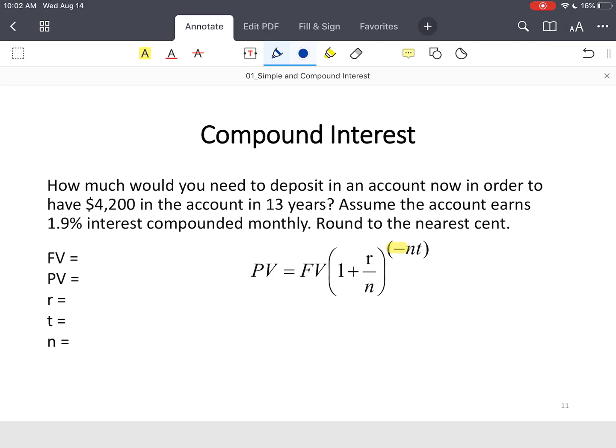So, let's look at this example. How much do you need to deposit in an account now? That's present value. That's what we're looking for, to have $4,200 in 13 years. Assume the account earns 1.9% interest compounded monthly. So, we know it's compounded monthly. Time is 13 years. The interest rate is 1.9% or 0.019. Substitute your values into the formula. We don't know what the present value is, but we do know we want $4,200 in 13 years. Compounded monthly, so we know that's 12.